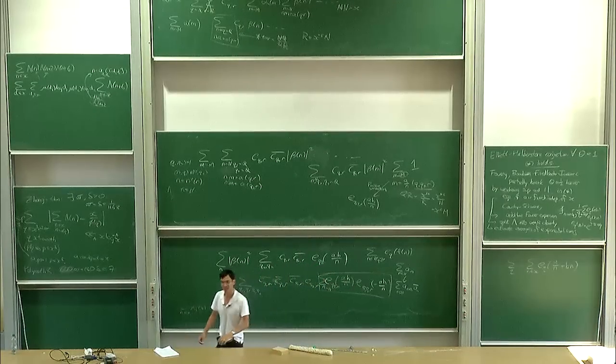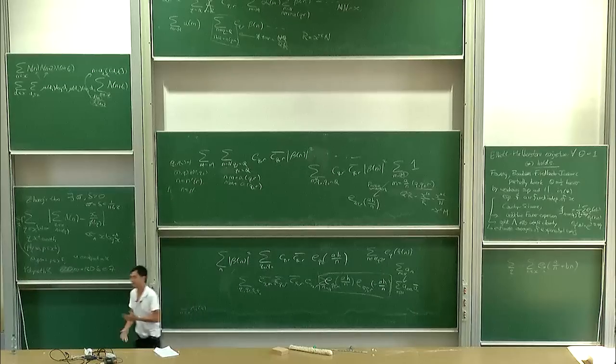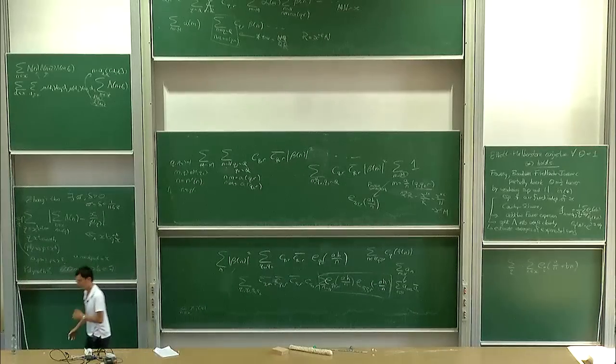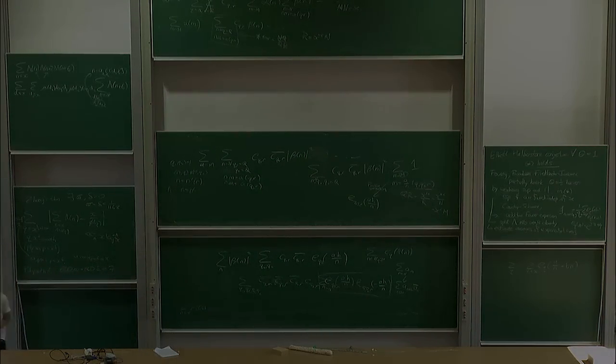So you just expand things out and need faith that you can Cauchy-Schwarz your way to the point where you have only an exponential sum with no unknown coefficients — and then you can make real progress. Thank you very much.